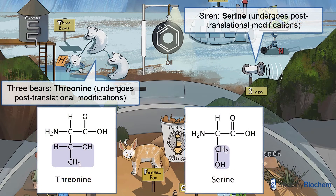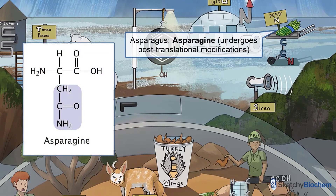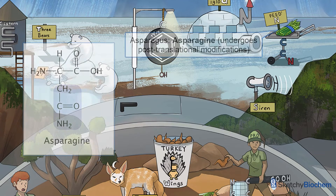Check out the siren and three bears — they represent serine and threonine, respectively. Serine and threonine undergo post-translational modification like the addition of O-oligosaccharides in the Golgi apparatus, which is necessary for cell trafficking. Those asparagus plants are asparagine. Asparagine also undergoes post-translational modification, specifically the addition of N-oligosaccharides in the endoplasmic reticulum, also necessary for cell trafficking and signaling.